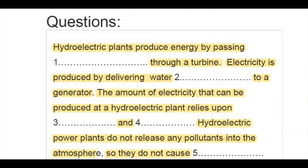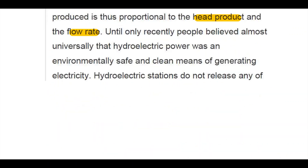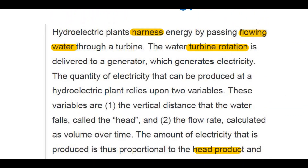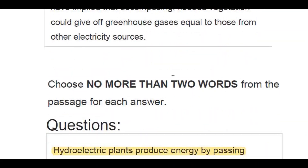The next sentence reads: 'Electricity is produced by delivering water as something to a generator.' For the second question, we go to the second sentence of the passage: 'The water turbine rotation is delivered to a generator which generates electricity.' So the answer is 'turbine rotation.'